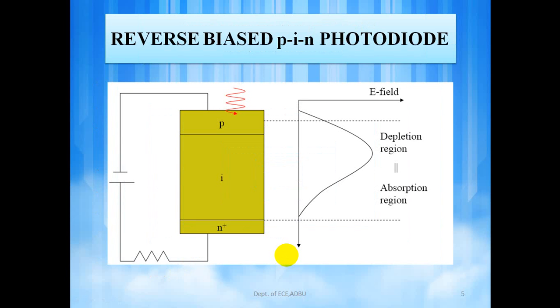This is a reverse bias PIN photodiode where all the absorption takes place in the depletion region. Intrinsic region can be an N type material that is slightly doped and to make a low resistance contact a doped N plus layer is added. The depletion layer width in a PIN diode does not vary significantly with bias voltage but is essentially fixed by the thickness of the intrinsic region so that the width is almost equal to the thickness.